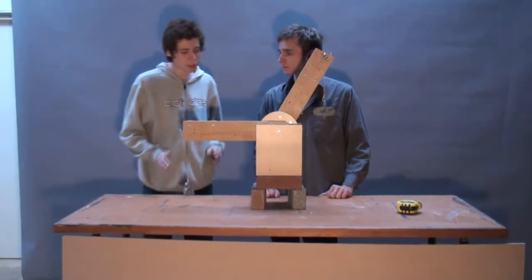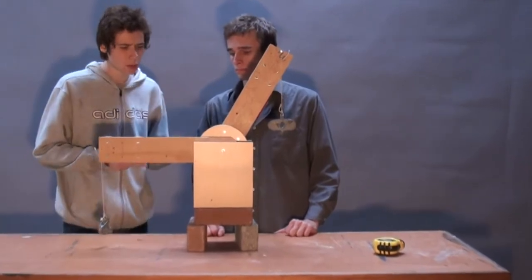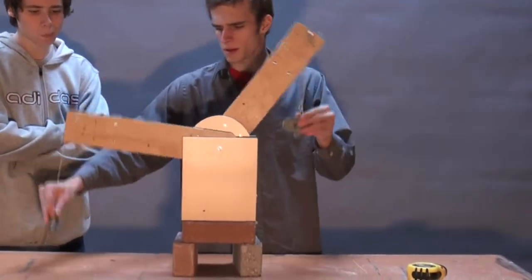So here we have another seesaw. Each leg is 16 inches, but this one's at a 60 degree angle. But if there's 2 pounds over here, and 1 pound over here, how can they balance?